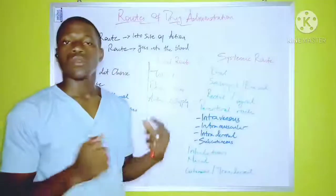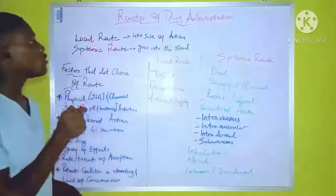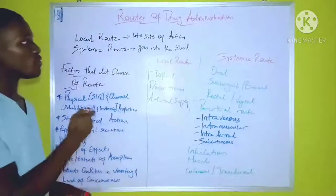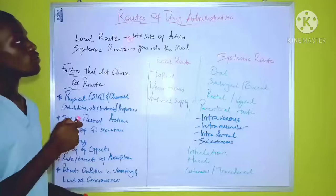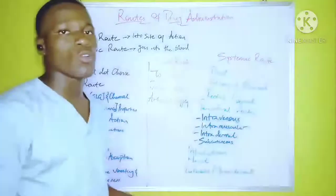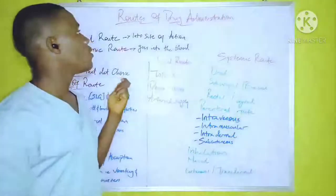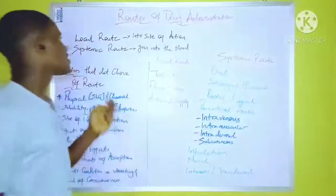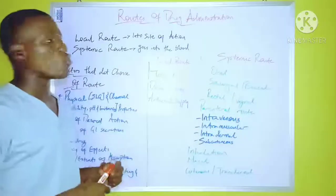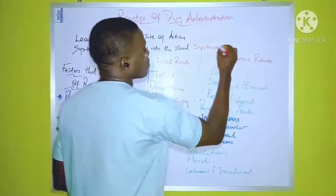There are two major classifications of the Routes of Drug Administration: the Local Routes of Drug Administration and the Systemic Routes of Drug Administration. The Local Routes involve application into the sites of desired action — that's the sites where you want the drug to act. The Systemic Routes involve the roads through which the drug goes into the blood before it enters systemic circulation.